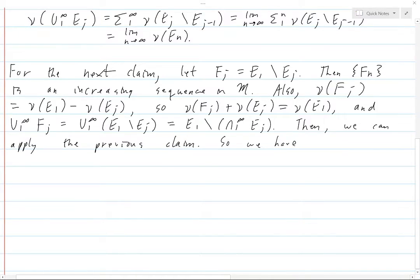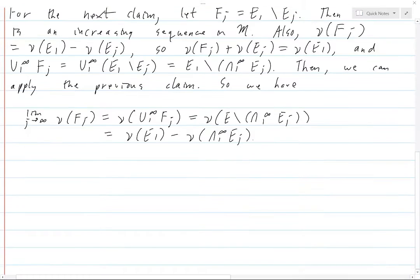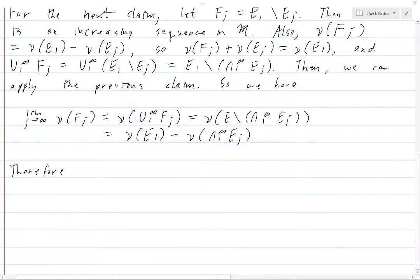So we have the following. The limit as j goes to infinity of nu of Fj. What is this? This is just nu of the union from 1 to infinity of Fj. That's by the previous claim because the Fj's are increasing. So now, this is equal to nu of E1 set minus the intersection from 1 to infinity of EJ. And now, that is equal to nu of E1 minus nu of the intersection of EJ. That's just rearranging that equation that we had above here.